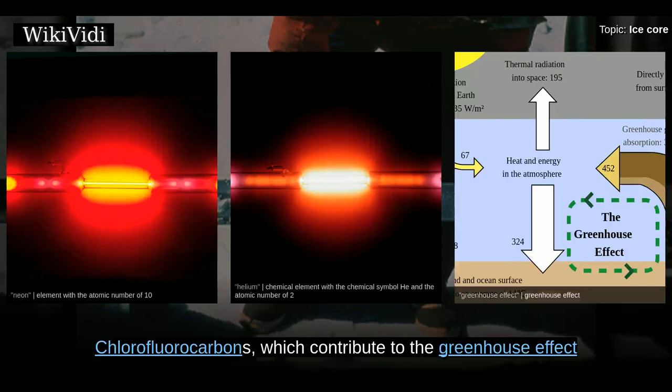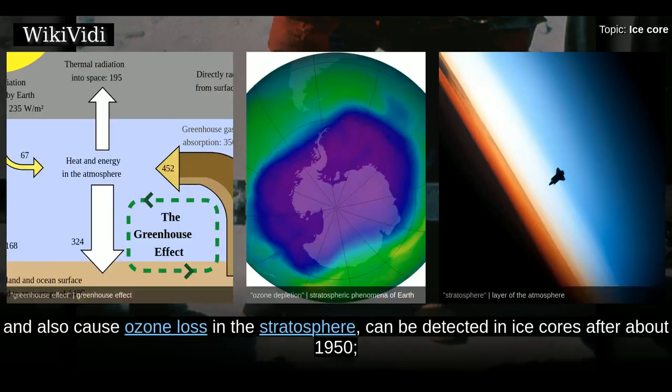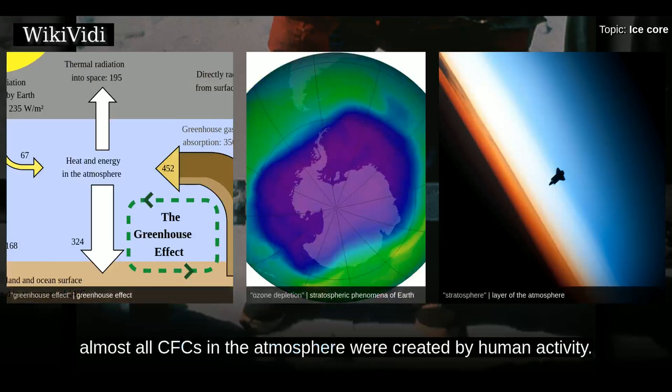Chlorofluorocarbons, which contribute to the greenhouse effect and also cause ozone loss in the stratosphere, can be detected in ice cores after about 1950. Almost all CFCs in the atmosphere were created by human activity.